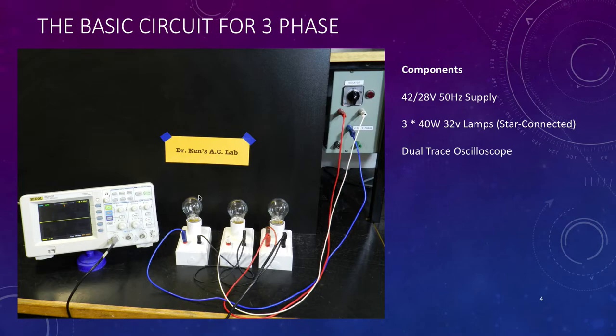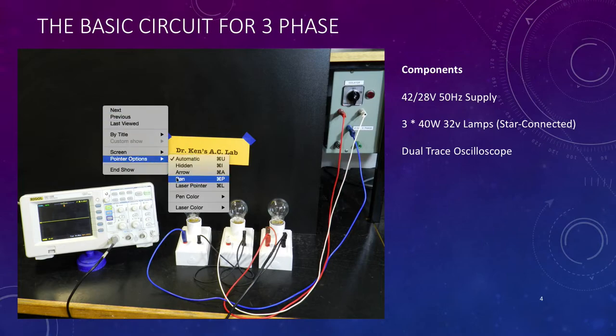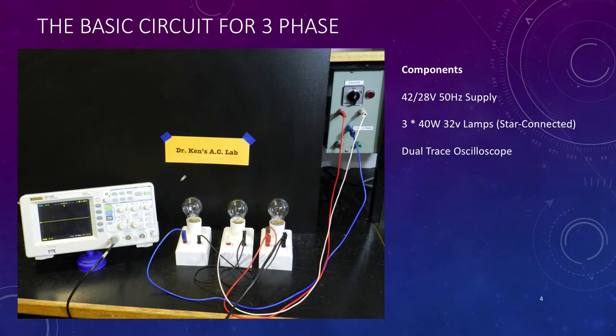Here's the connection. Here are our three 40 watt lamps, and here's our three phase supply. We have A phase, B phase, and C phase. There is a neutral which for this application we're not going to use, and we have an isolator which allows us to turn the supply on and off.